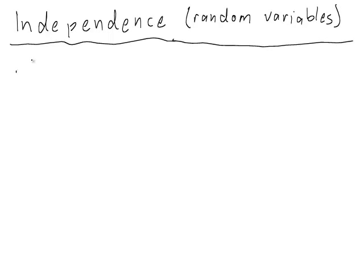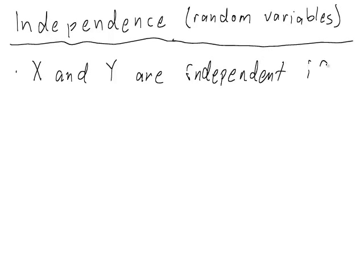So we say that two random variables x and y are independent if we can write their joint distribution, that is P_{x,y}. Remember, this is the probability that x takes on value little x and y takes on value little y. That's just the product of the individual probabilities for x and y separately.